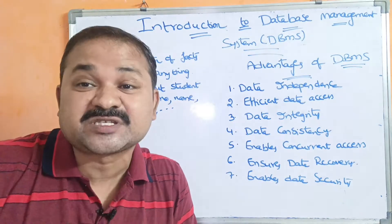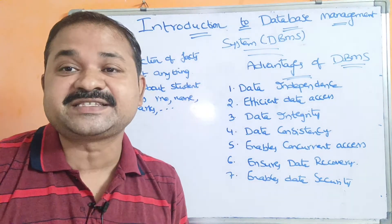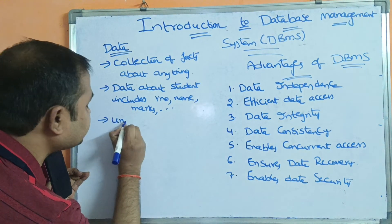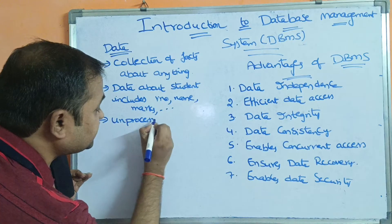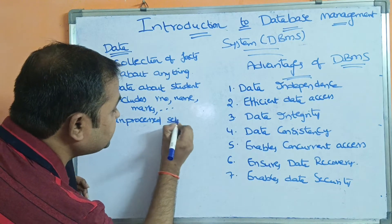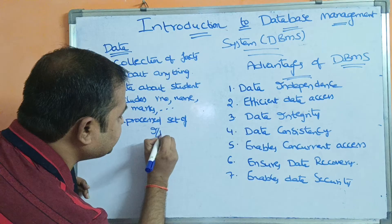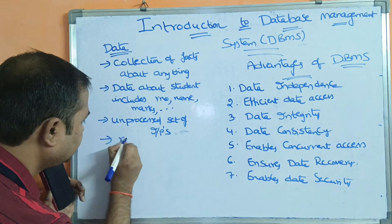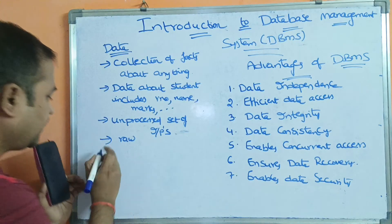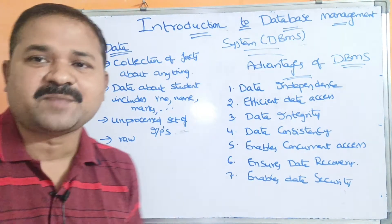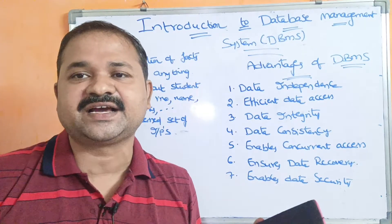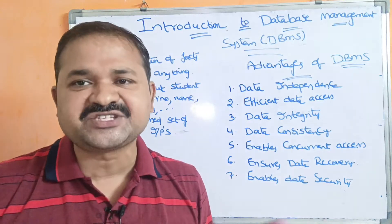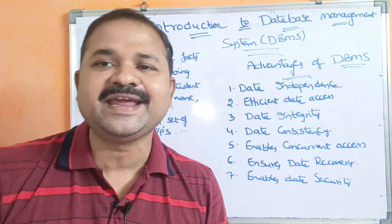Data means unprocessed — that means it is raw. An unprocessed set of inputs is called data. For example, the marks of all 70 students in a class is nothing but data.